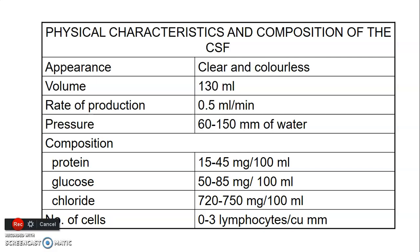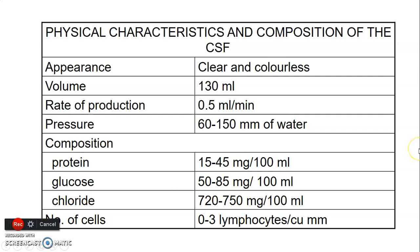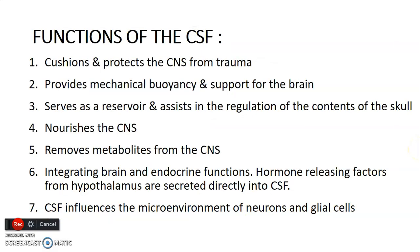CSF contains protein, glucose, chlorides, and a number of cells, and these are the normal ranges expected. These parameters are very important because during infection or meningitis, for example, you are able to take the CSF and examine for any elevation or decline in these parameters to diagnose a problem.